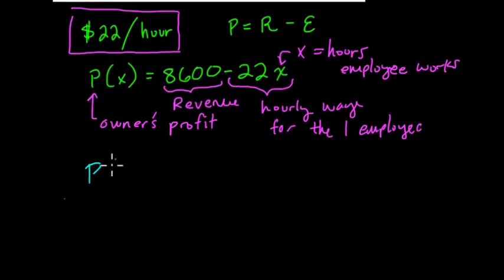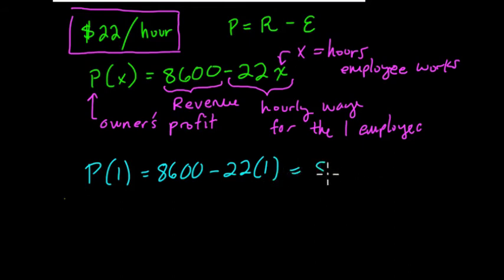So for example, we could say, what is P of 1? Well, that would be 8,600 minus 22 times 1, or minus 22, and that equals 8,578. So here we can see that if we substitute 1 in for X, we lose one group of 22.